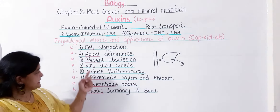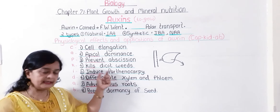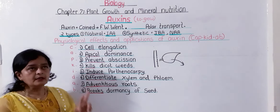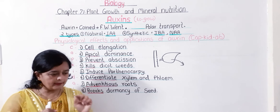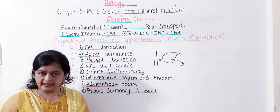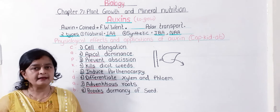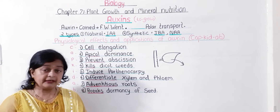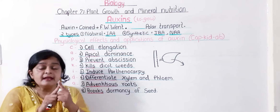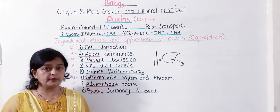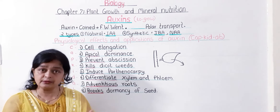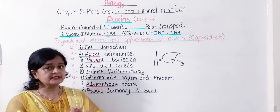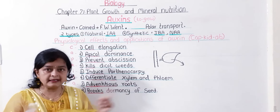The fourth function is that auxin kills dicot weeds. For example, in a lawn, you see only small grasses — grasses are monocotyledonous plants. The auxin secreted by those monocotyledonous plants never allows dicotyledonous plants to grow in between them. So auxin is responsible for killing dicotyledonous weeds — it does not allow dicot seeds to grow in a field of monocot plants.